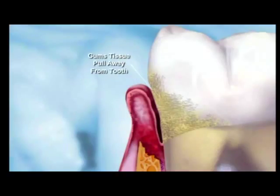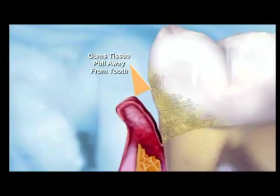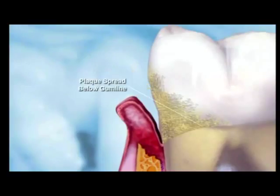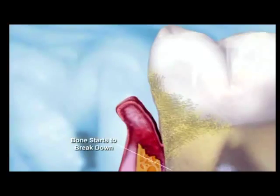Soft tissue, or gum tissue, pulls away from the tooth forming a pocket which is infected with bacteria. Plaque and calculus spread and grow below the gum line, breaking down the bone and connective tissue.